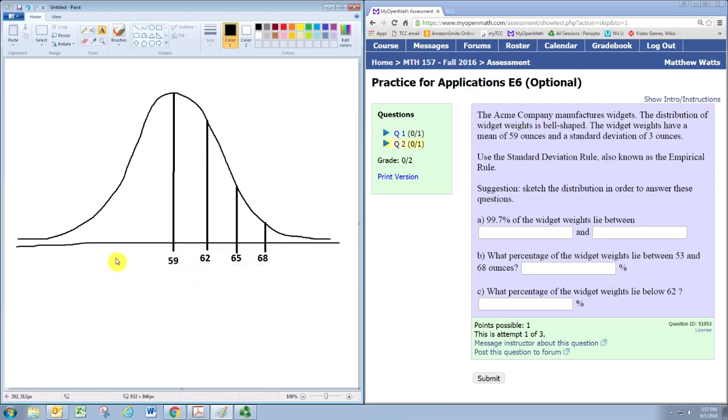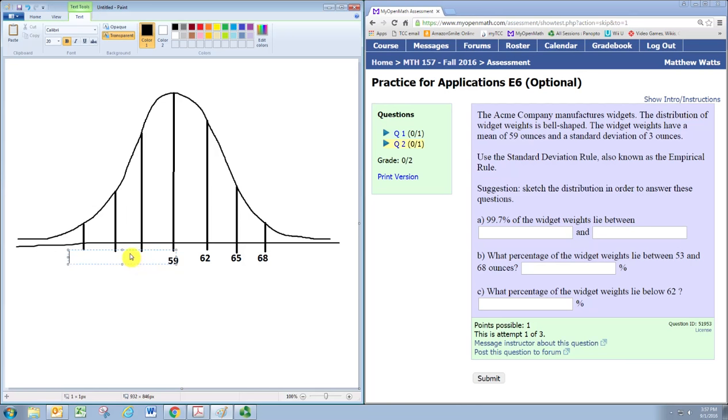Similarly, going to the left we would be subtracting the standard deviations. So going one to the left we'd have 59 minus 3 is 56, and 56 minus 3 is 53, and 53 minus 3 is 50.